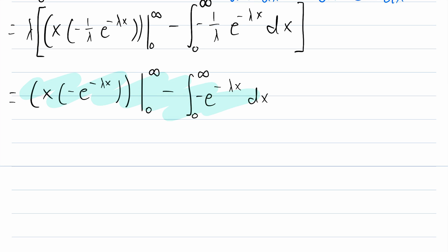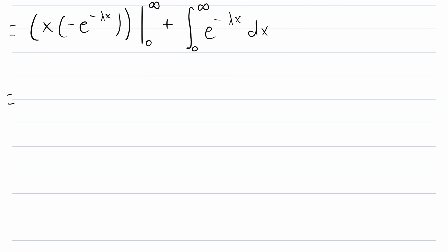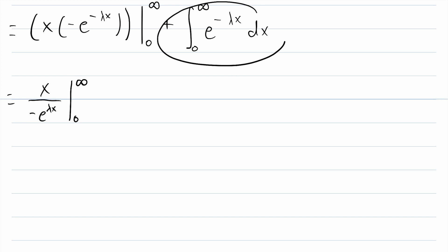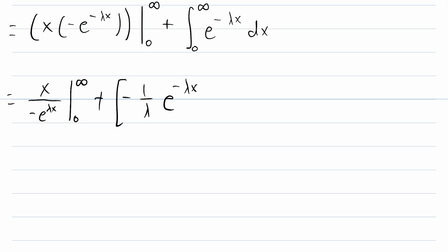Let's rewrite the first piece: we have x in the numerator, and since the exponent is negative we can move the exponential to the denominator as e to the positive lambda x, evaluated from 0 to infinity. For the remaining integral, we integrate e to the negative lambda x to get negative 1 over lambda times e to the negative lambda x, evaluated from 0 to infinity.